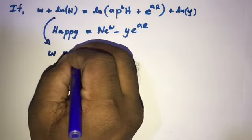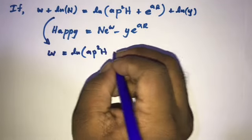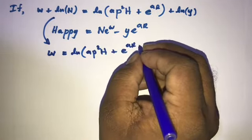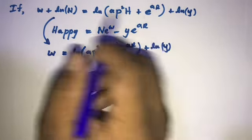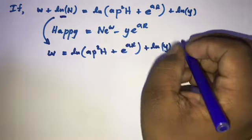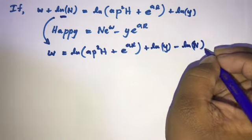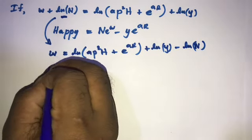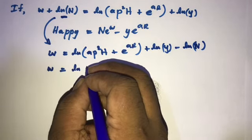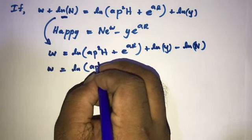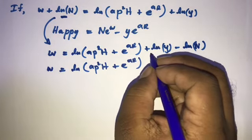We can write w is equal to natural log of ap squared capital h plus e to the ar, plus natural log of y, minus natural log of n. Now according to the rules of natural log, we can write natural log of ap squared h plus e to the ar.